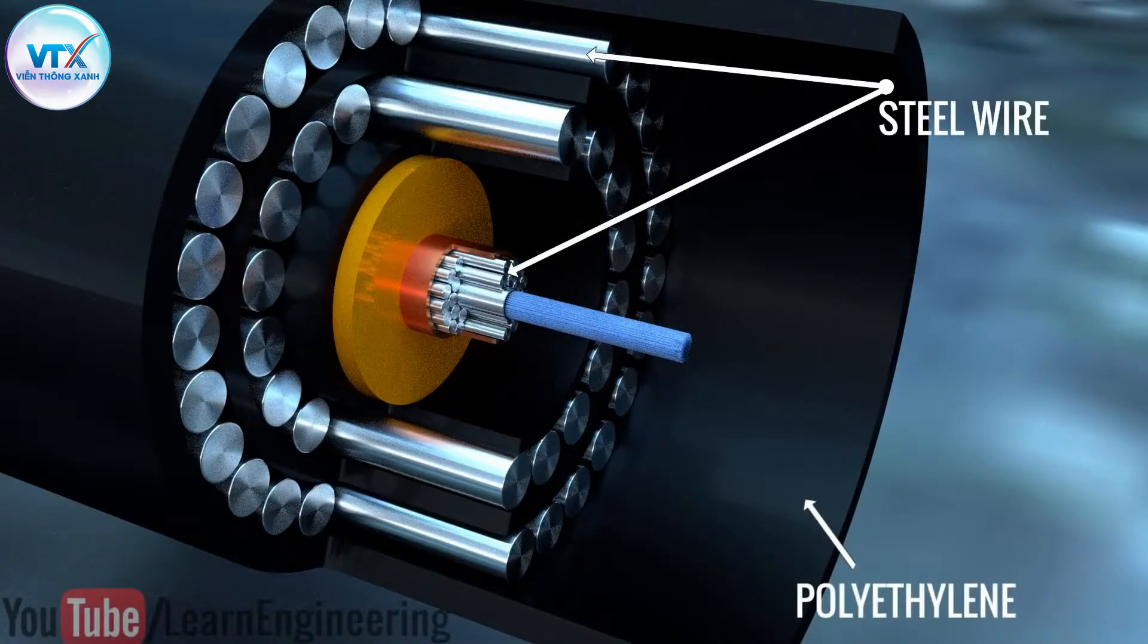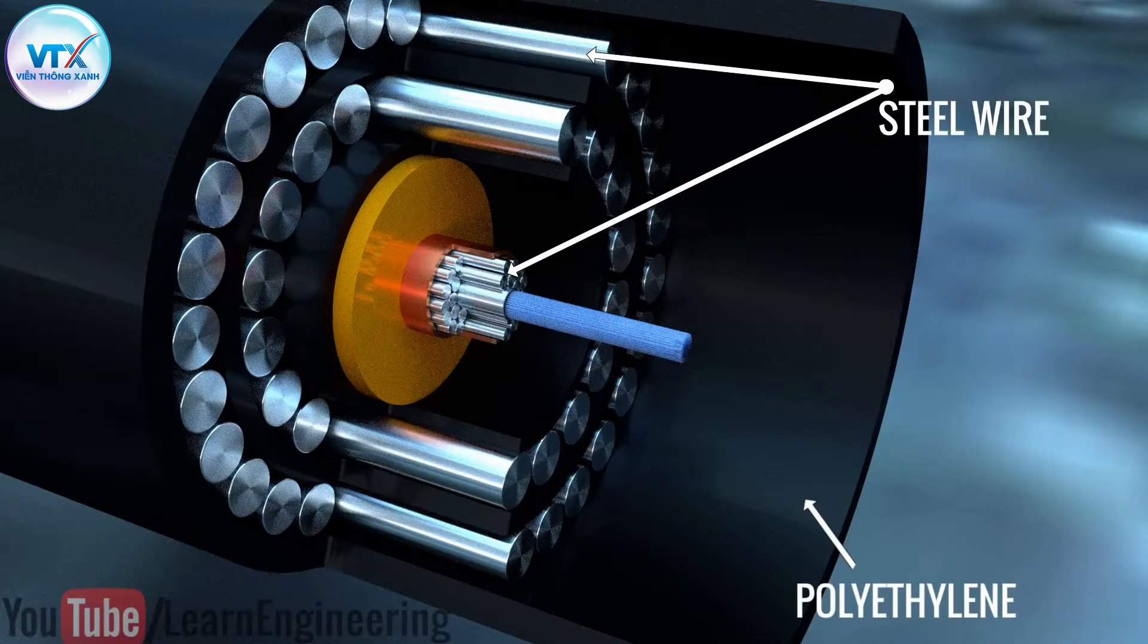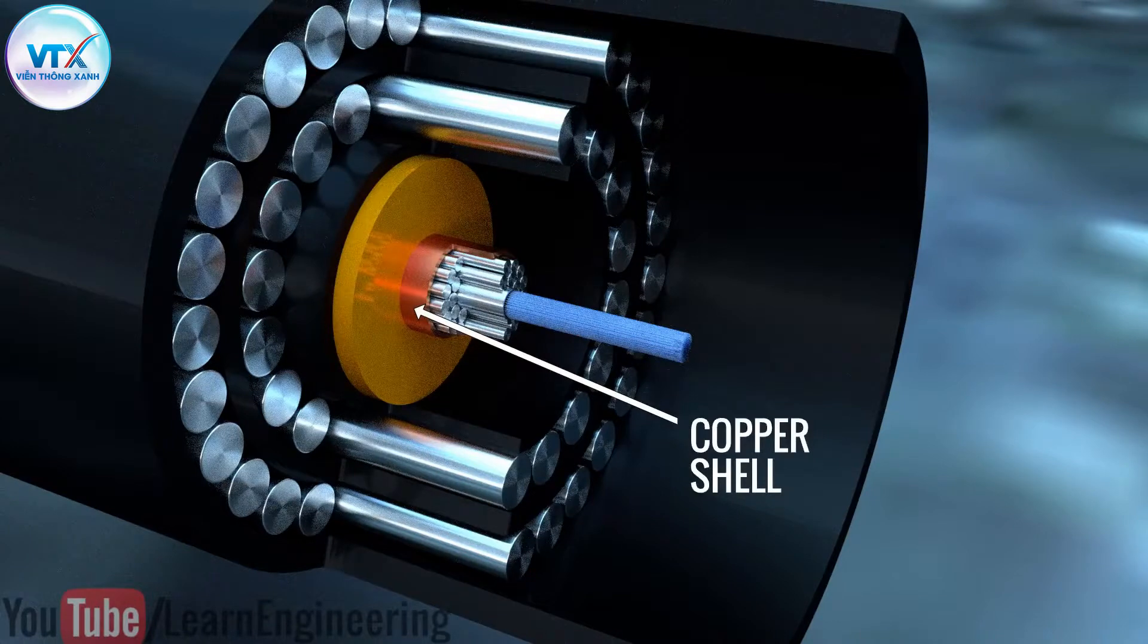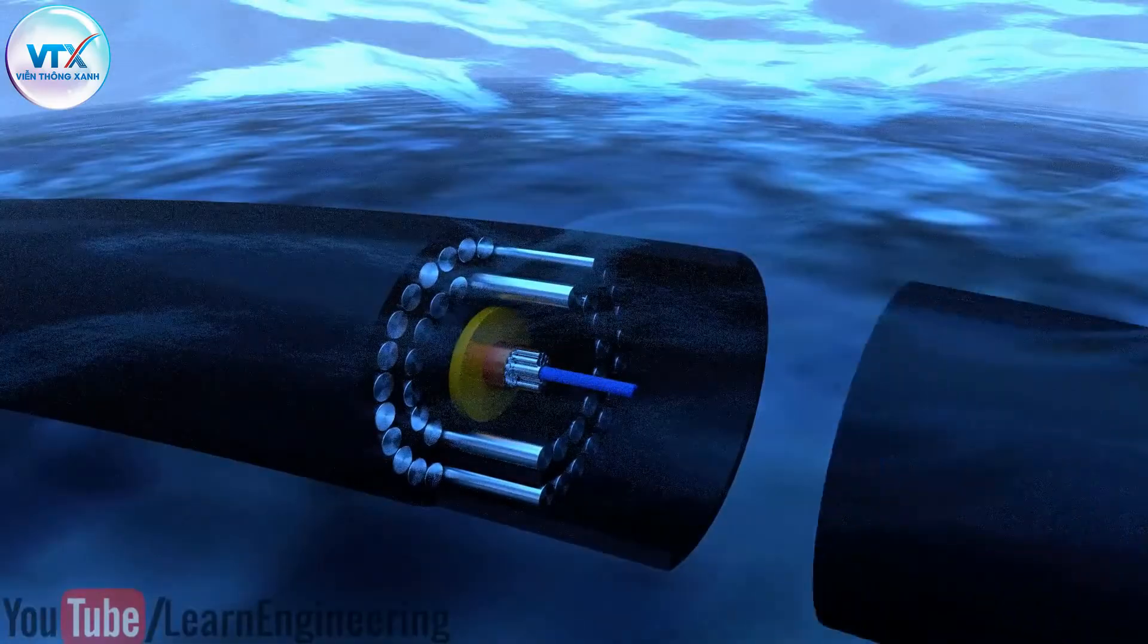Now, the question is, where does the amplifier get power from under these deep oceans? Well, for this, a thin copper shell is used inside the cable, which carries electric power along the cable so that the amplifiers can be powered.